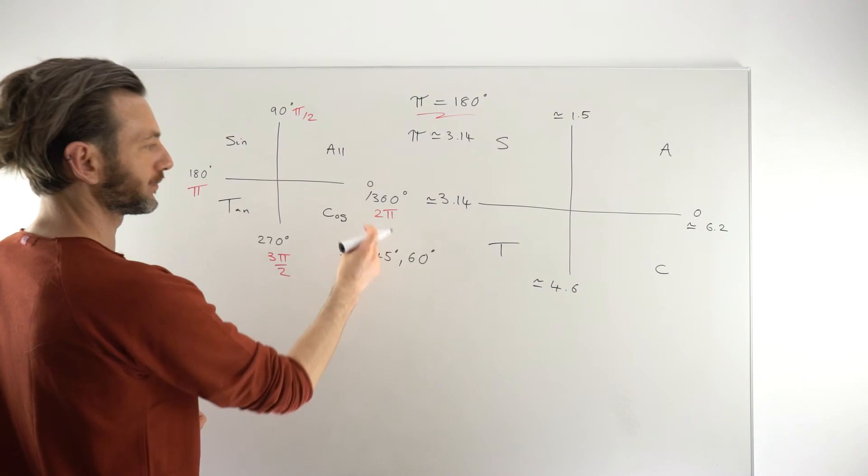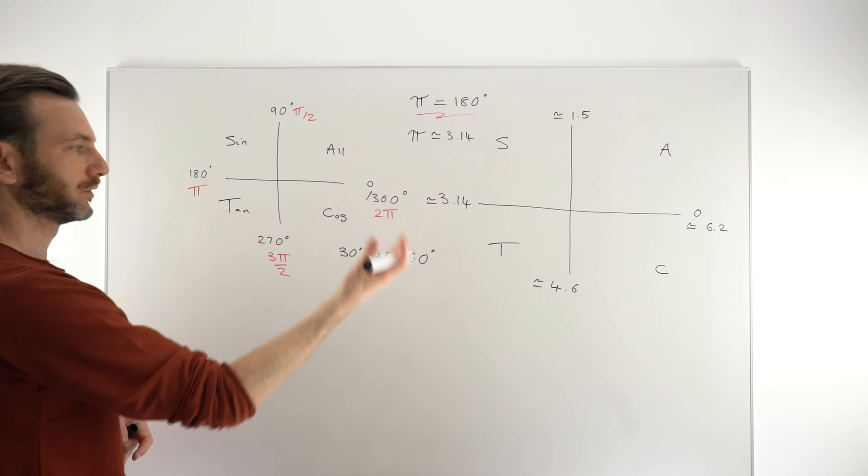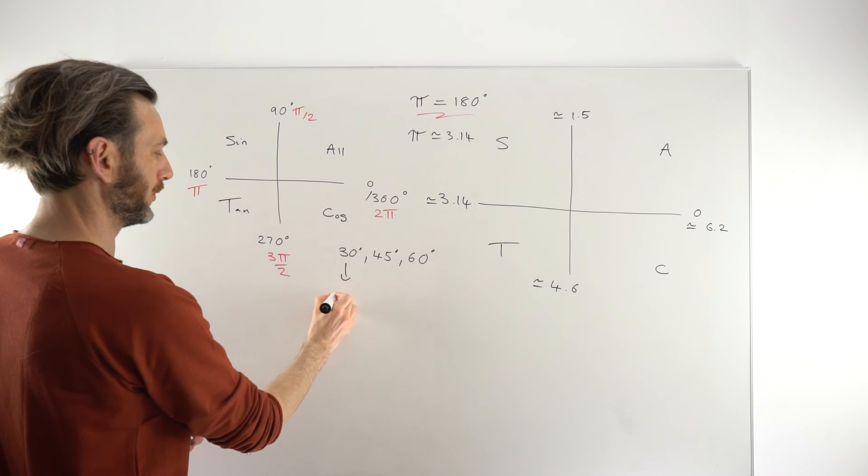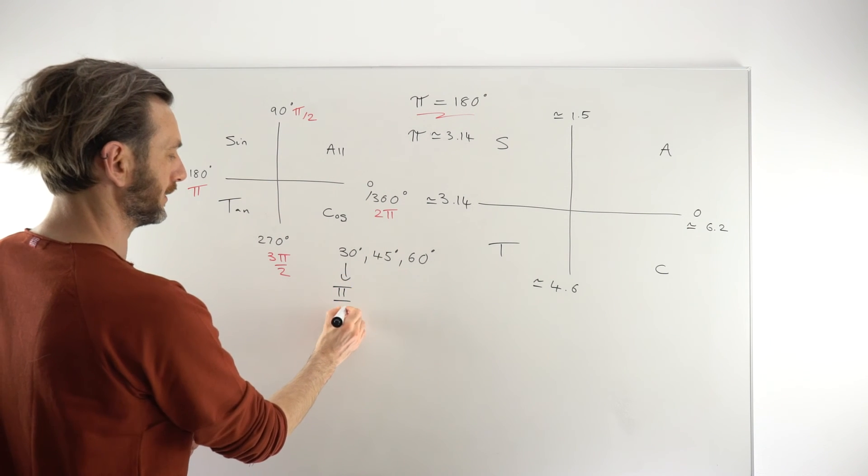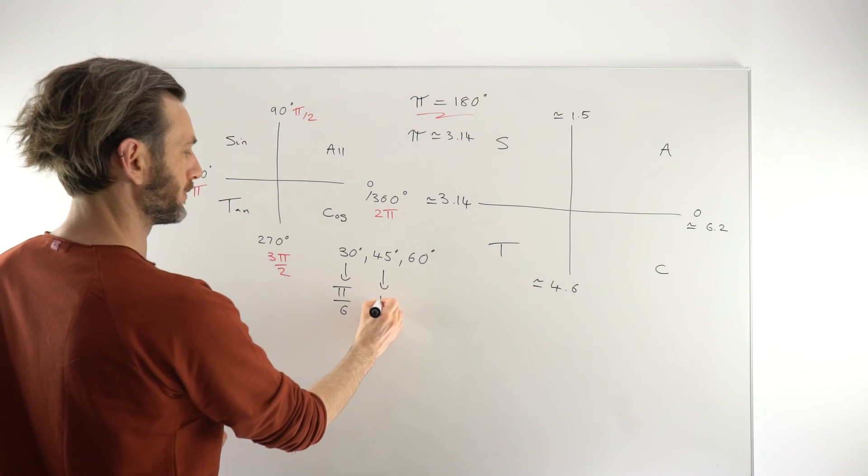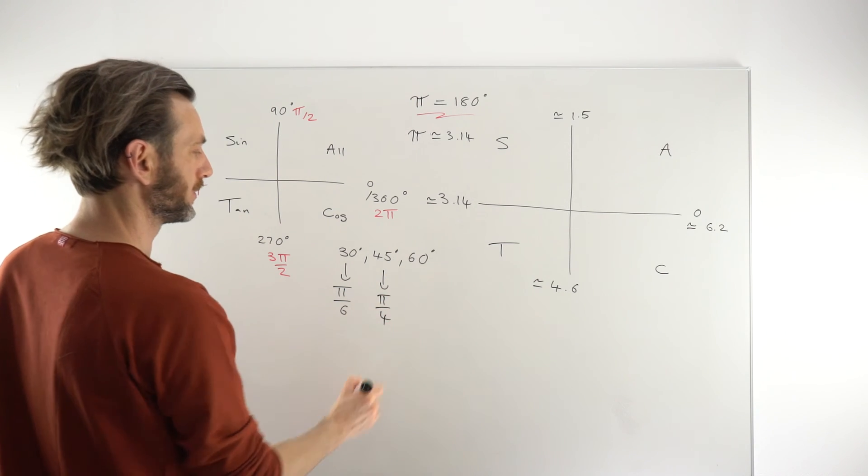That's when you're going to have nice friendly versions, multiples, divisions of π. So 30 degrees, for example, is π/6 radians. 45 degrees is π/4 radians, etc.